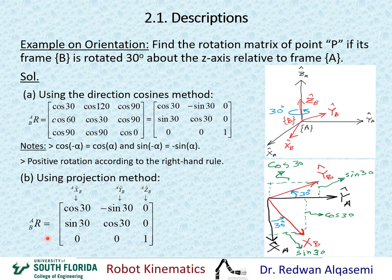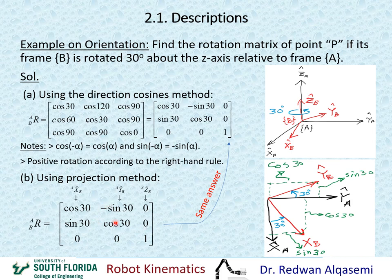Comparing the two results, they are the same matrix — same answer found in two different ways. Most of us are used to the projection method, but now we also have the direction cosines method to find the rotation matrix.